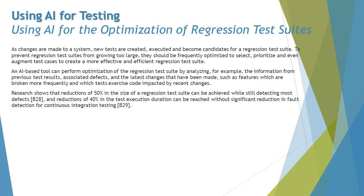Research shows that a reduction of 50% in the size of the regression test suite can be achieved while still detecting most defects, and a reduction of 40% in test execution duration can be reached without significant reduction in fault detection for continuous integration testing. A 50% reduction is not a small thing — it means being more targeted toward defect detection while the execution duration is also reduced by 40%, further benefiting continuous integration pipelines. The area is still under exploration and new innovations in AI for testing are certainly on the way.